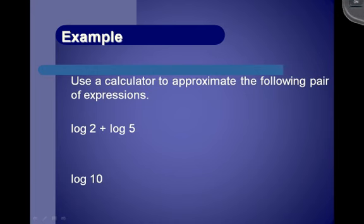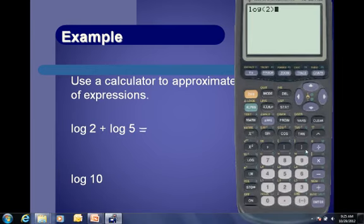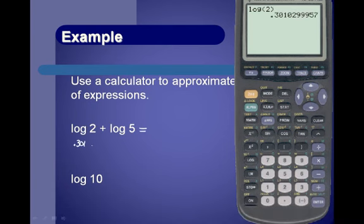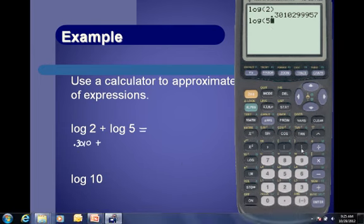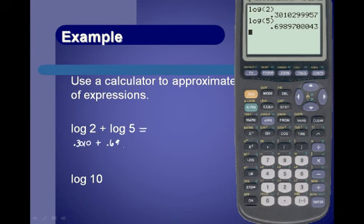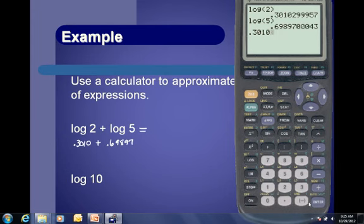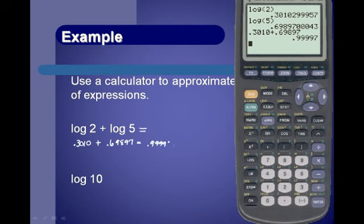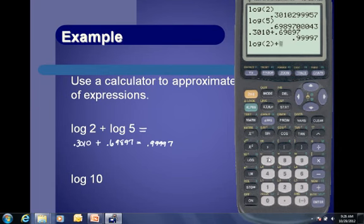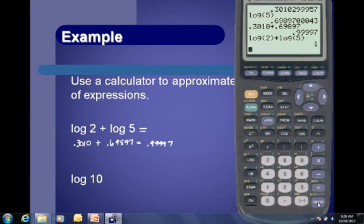For these examples, we use a calculator to approximate the pair of expressions: log(2) + log(5). The log of 2 is approximately 0.3010, and the log of 5 is approximately 0.69897. Adding those gives 0.9997, which is essentially 1. We could also enter log(2) + log(5) directly into the calculator to get exactly 1.